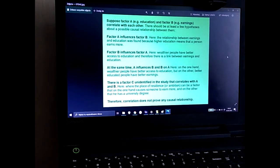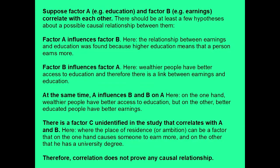Suppose factor A, like education, and factor B, like earnings, correlate with each other. There should be at least a few hypotheses about a possible causal relationship between them. First, factor A influences factor B, means education influences earnings. The relationship between earnings and education was found because higher education means that a person earns more.